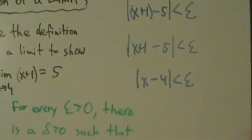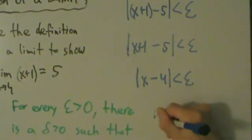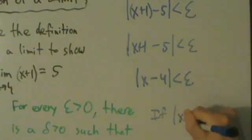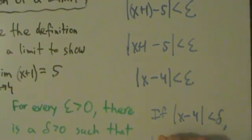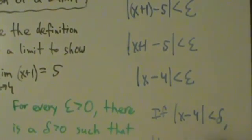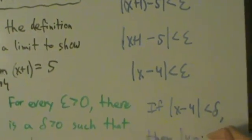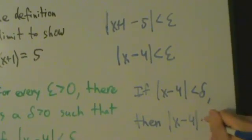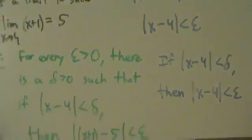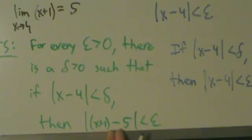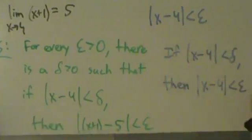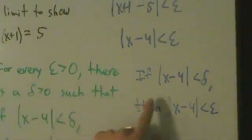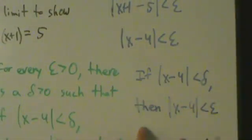In other words, what we want is this: if absolute value of x minus 4 is less than delta, then absolute value of x minus 4 is less than epsilon. Because the condition we want is absolute value of f(x) minus L less than epsilon, but this simplifies to absolute value of x minus 4. So what we want is: if absolute value of x minus 4 is less than delta, then absolute value of x minus 4 is less than epsilon.